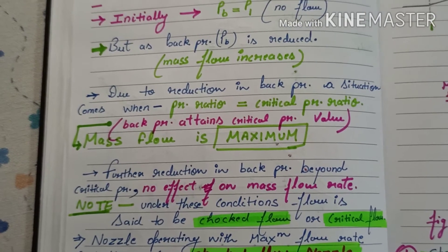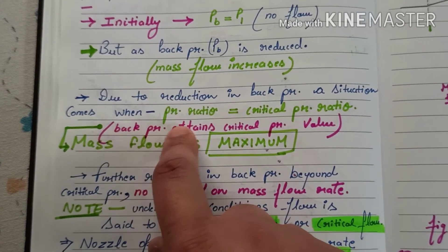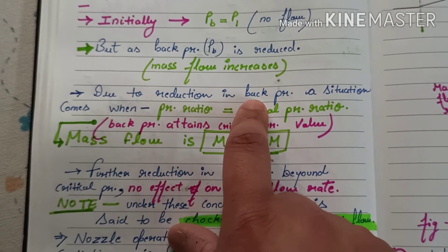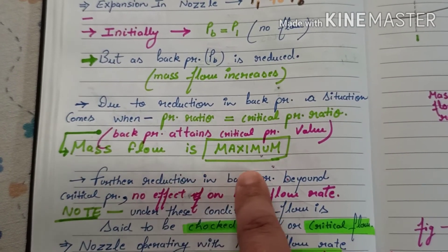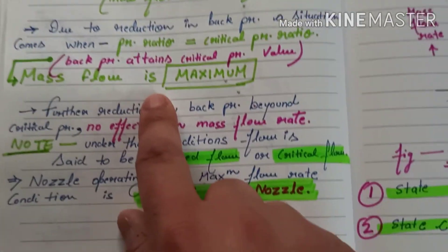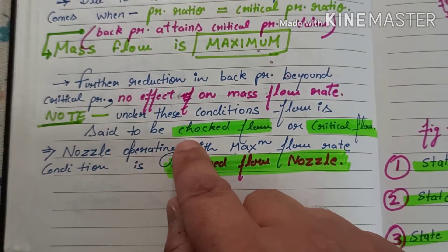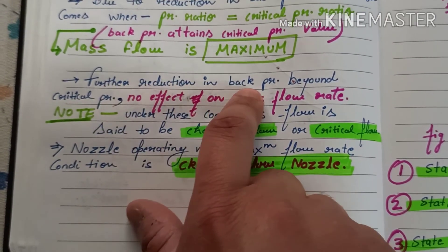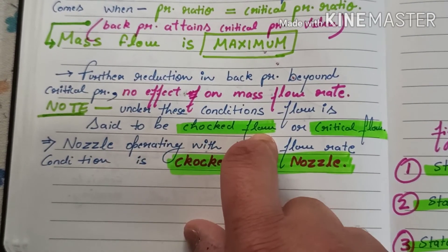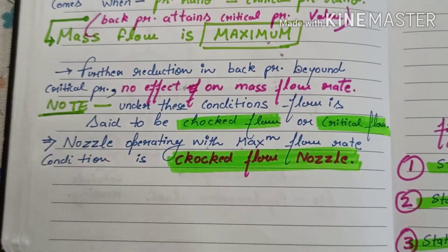As discussed, due to reduction in back pressure the mass flow rate increases and reaches a maximum at a certain situation. Similarly, increasing back pressure also leads to a point where mass flow rate is again at a maximum. In summary, when further reduction in back pressure does not lead to any effect on the mass flow rate, it is called choked flow, and the nozzle through which the flow is taking place is called a choked flow nozzle.